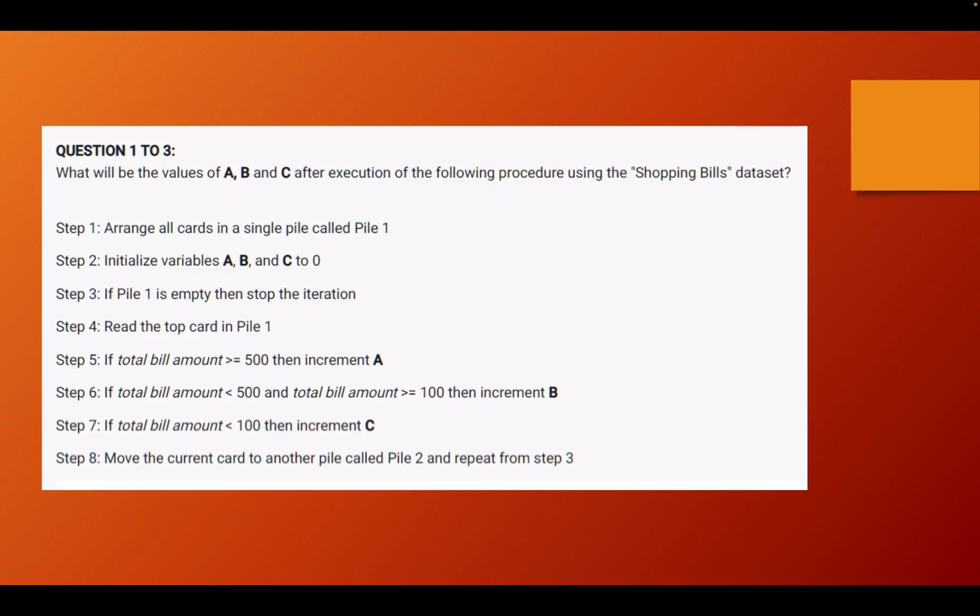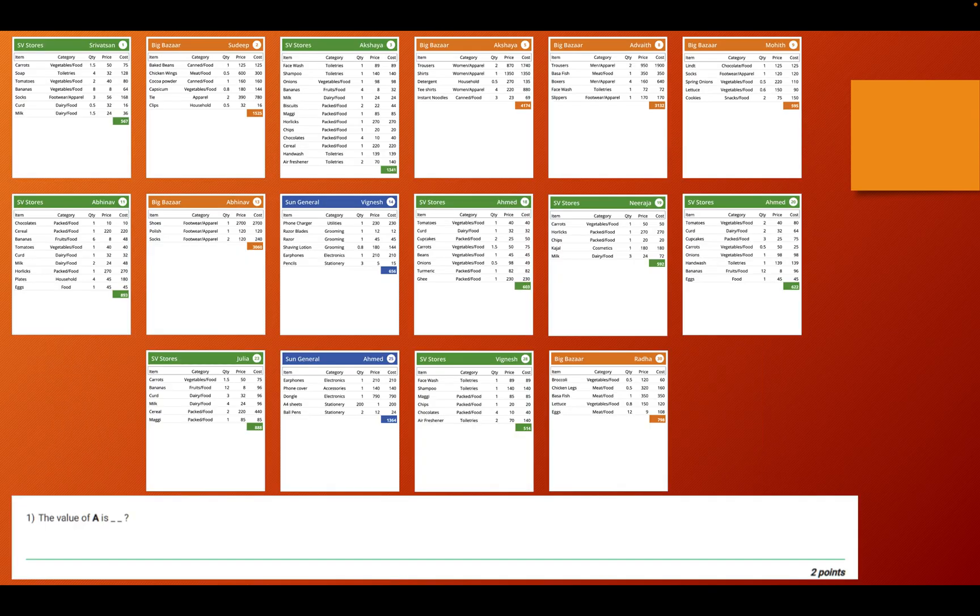This is basically just going through the cards again and again. Let's just move on to the answers. For the sake of simplicity I have collected all the cards from the dataset which actually had a bill amount greater than or equal to 500 and you can see that there were actually a total of 16 cards. So that is what is going to be your answer.